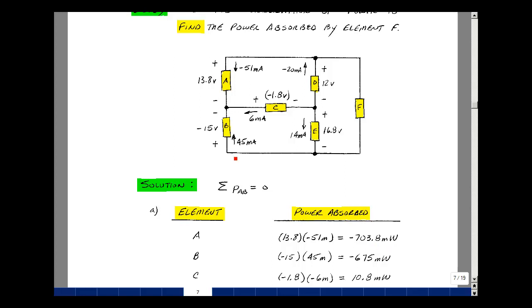For element B, I have the current entering the plus terminal coming out to minus. Power absorbed then is minus 15 volts times 45 milliamps, and that's a minus 675 milliwatts.